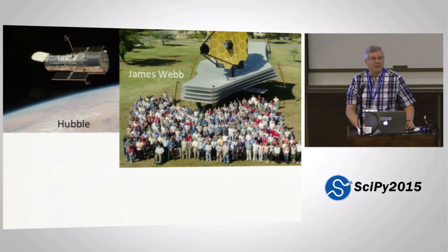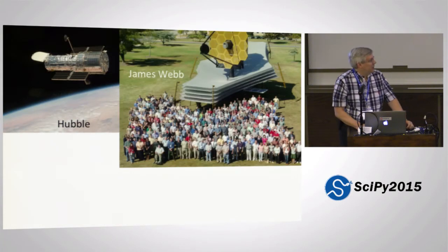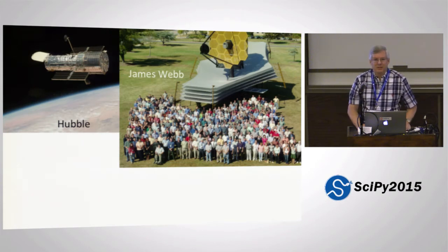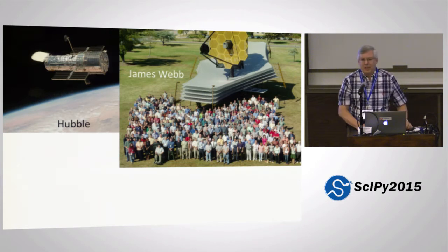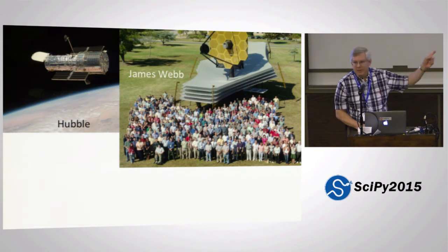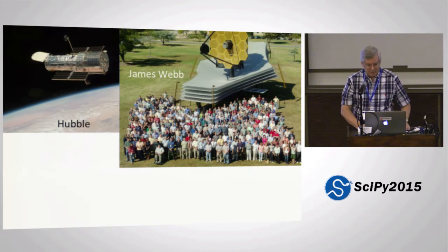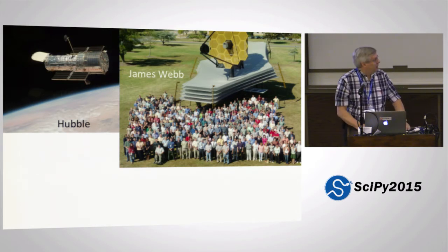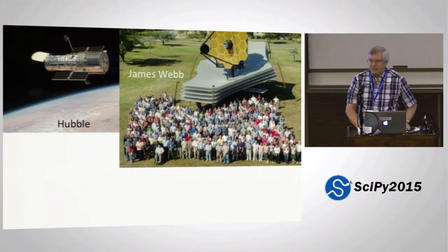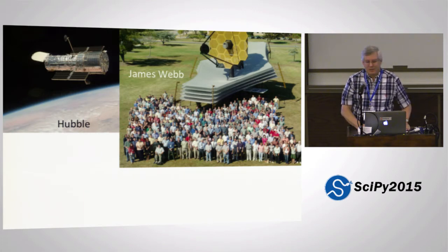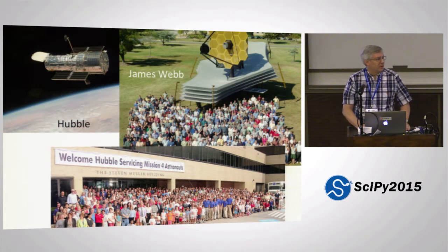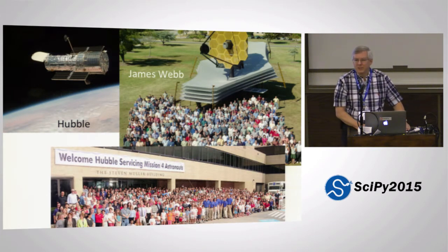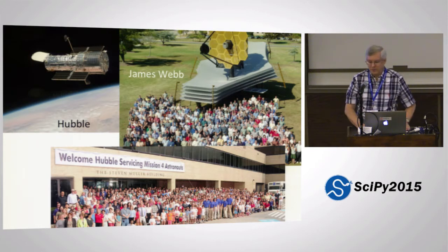In about three years, NASA hopes to launch the James Webb Space Telescope, which will be a larger infrared-optimized telescope that will be a successor to Hubble. The data from both of these observatories is processed and managed by the folks at the Space Telescope Science Institute located in Baltimore, some of whom are in this room. Most of them are friendly.